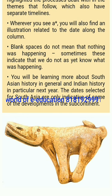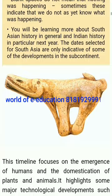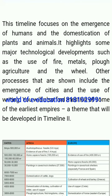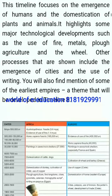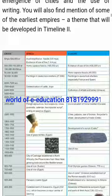Blank spaces do not mean that nothing was happening — sometimes these indicate that we do not as yet know what was happening. We will be learning more about South Asian history in general and Indian history in particular next year. Dates selected for South Asia are only indicative of some of the developments in the subcontinent. This timeline focuses on the emergence of humans and the domestication of plants and animals, and highlights major technological developments such as the use of fire, metals, plough, agriculture and the wheel. The processes shown include the emergence of cities and the use of writing, as well as mention of some of the earliest empires.